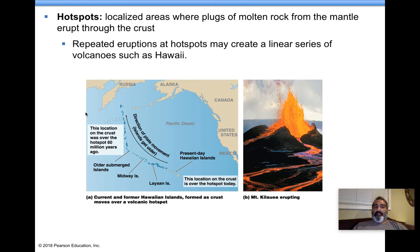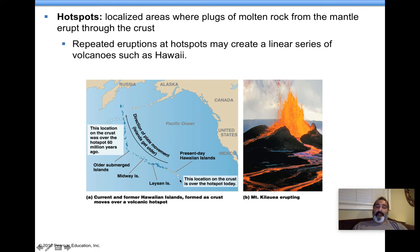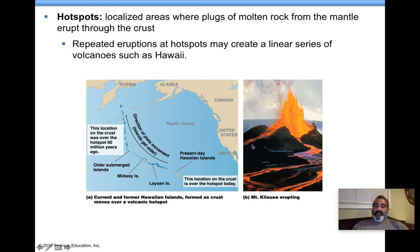Hotspots are areas where there's a break in the Earth and molten magma is coming up through. The Hawaiian Islands are formed as the plate moves — the hotspot doesn't move. As the plate moves, you'll notice the islands are moving, and the islands get older the farther they are from the hotspot. Currently, the island of Hawaii specifically is growing in size — volcanic eruptions occur all the time, just adding rock. As this plate moves, a new island will eventually form, creating a chain of islands above a hotspot.